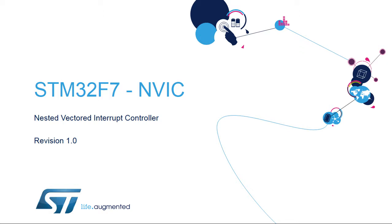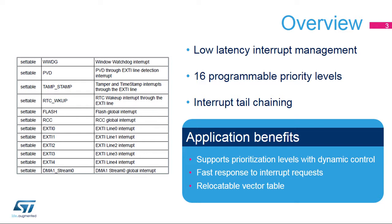Hello, and welcome to this presentation of the STM32 Nested Vector Interrupt Controller. We will be presenting the features of this controller. The Nested Vector Interrupt Controller embedded inside the STM32F7 microcontroller provides up to 110 interrupt channels served with low latency. One of 16 priorities can be assigned to each interrupt source. Applications can benefit from dynamic prioritization of interrupt levels, fast response thanks to low latency response and tail chaining, and also from vector table relocation.